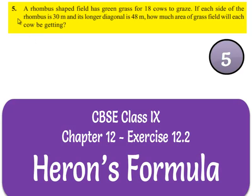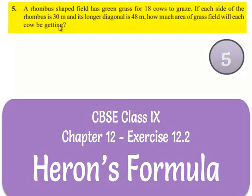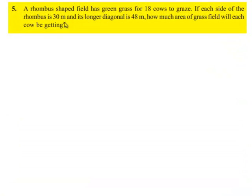Now let us move on to the fifth question. A rhombus shaped field has green grass for 18 cows to graze. If each side of the rhombus is 30 meters and its longer diagonal is 48 meters, how much area of grass field will each cow be getting? So let us move on to the solution.